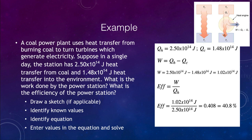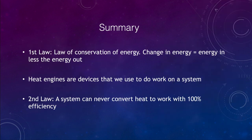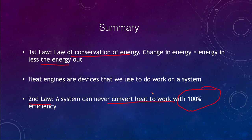To summarize, we talked about the two laws of thermodynamics: the first is the law of conservation of energy — the change in energy is energy in minus energy out; the second law states that a system can never convert heat to work with 100% efficiency. Heat engines are devices that we use to do work on a system. That concludes this lecture on thermodynamics — we'll be back next time for another topic in physical science.